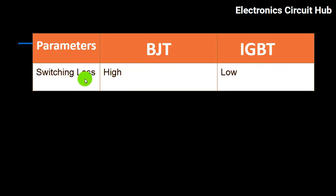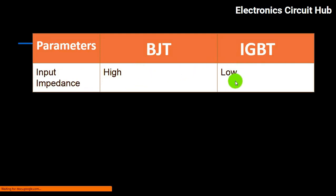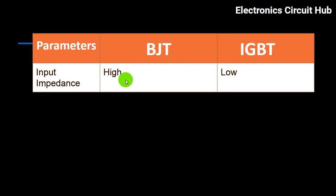For switching loss: BJT is high, IGBT is low. For conduction loss: BJT is high, IGBT is low. For input impedance: BJT is high, IGBT is low.